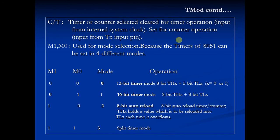Now moving on to C/T: this bit selects clear for timer operation or counter operation. Timer operation means input from the internal system clock, and counter operation means input from the TX input pin. So we can select timer or counter using this bit.